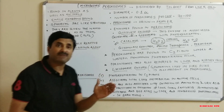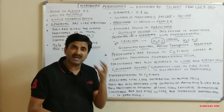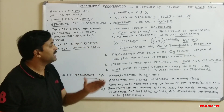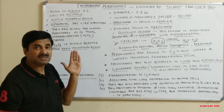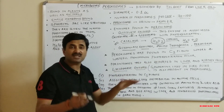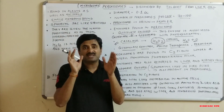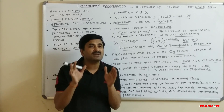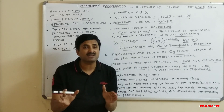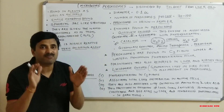Peroxisomes are especially found in C3 plants. As we know, plants are basically of two categories: C3 plants and C4 plants. The maximum plants on earth are C3 plants, so peroxisomes are found in C3 plants only. These peroxisomes in C3 plants are associated with a wasteful phenomenon known as photorespiration. Photorespiration is a wasteful phenomenon that never occurs in C4 plants — it only occurs in C3 plants.